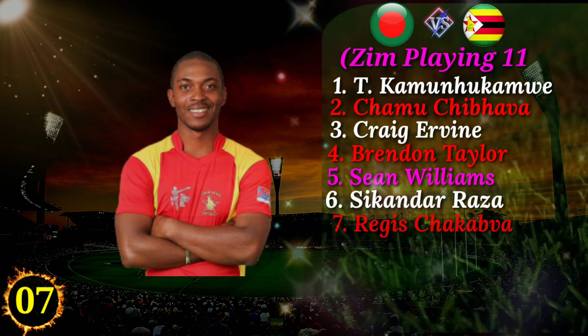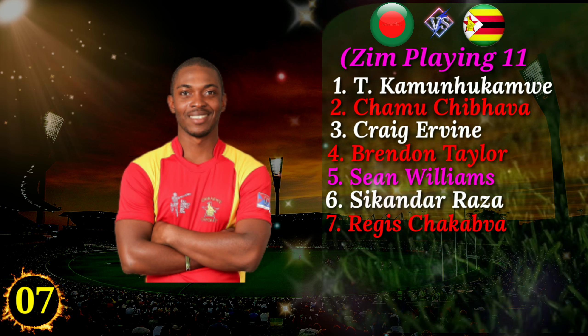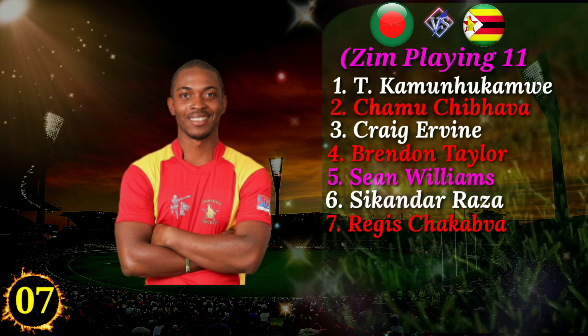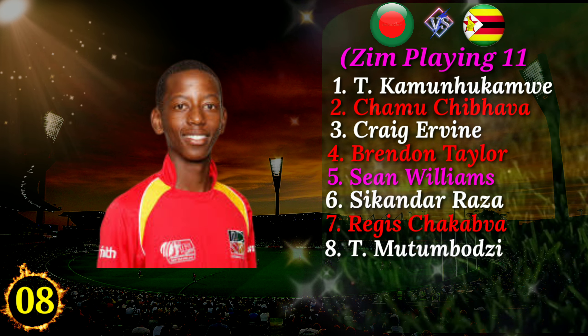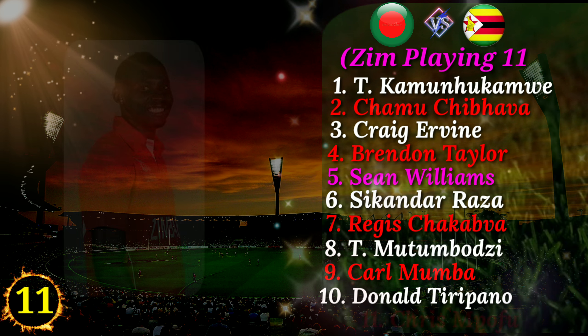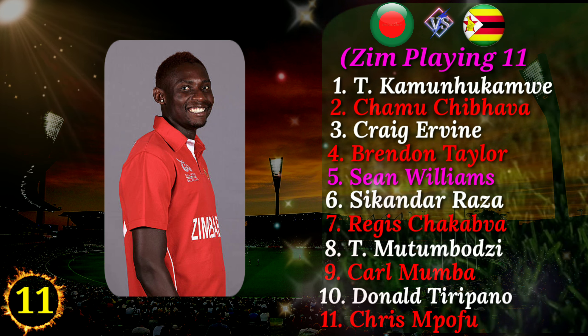Number 7 right-handed batsman Regis Chakabva. Number 8 batting all-rounder Tino Mutombodzi. Number 9 right-arm fast medium bowler Charles Mumba. Number 10 right-arm fast medium bowler Donald Tiripano. Number 11 right-arm fast medium bowler Christopher Mpofu.